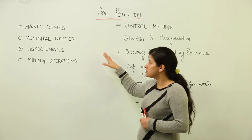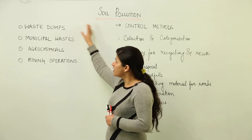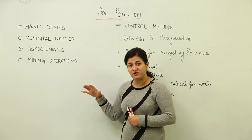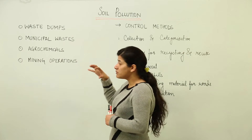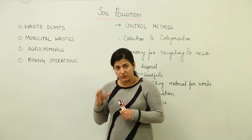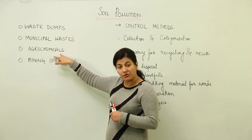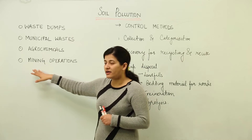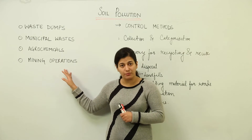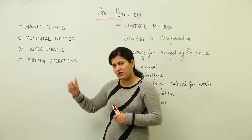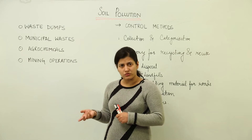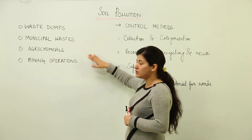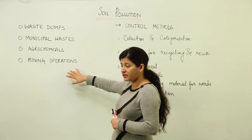The various sources of soil pollution include waste dumps, which are thrown rampantly here and there, and municipal waste — the huge mountains of dumps that pollute the soil because they contain components that are not biodegradable. Then there are agrochemicals resulting from agricultural activities that go into the soil. Mining operations, being undertaken at a very fast pace in the modern world, also cause soil pollution because they take out large amounts of topsoil, destroying the soil composition.